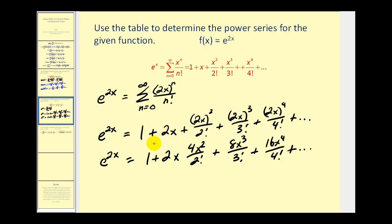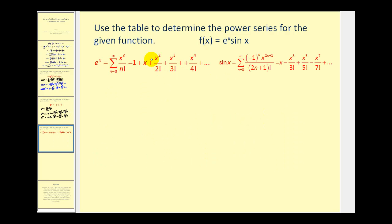Let's take a look at a couple that are a little more involved. Here we want to determine the power series for f of x equals e to the x times sine x. We have a power series for e to the x and a power series for sine x, so if we multiply these two power series together we'll have the power series for the given function. We're going to multiply the first several terms of each power series.